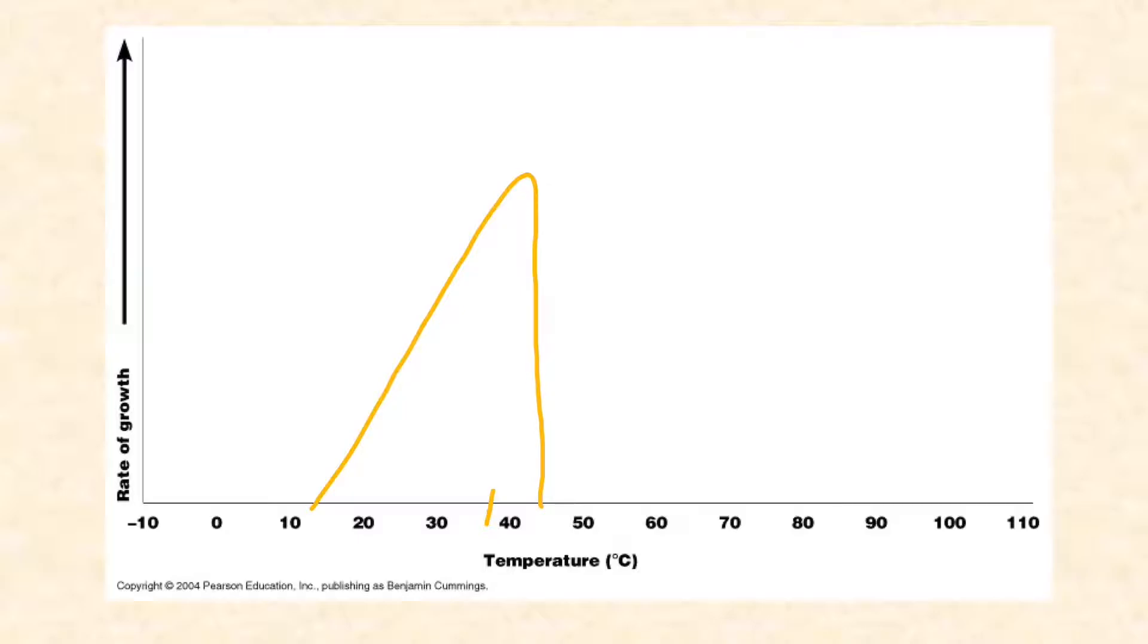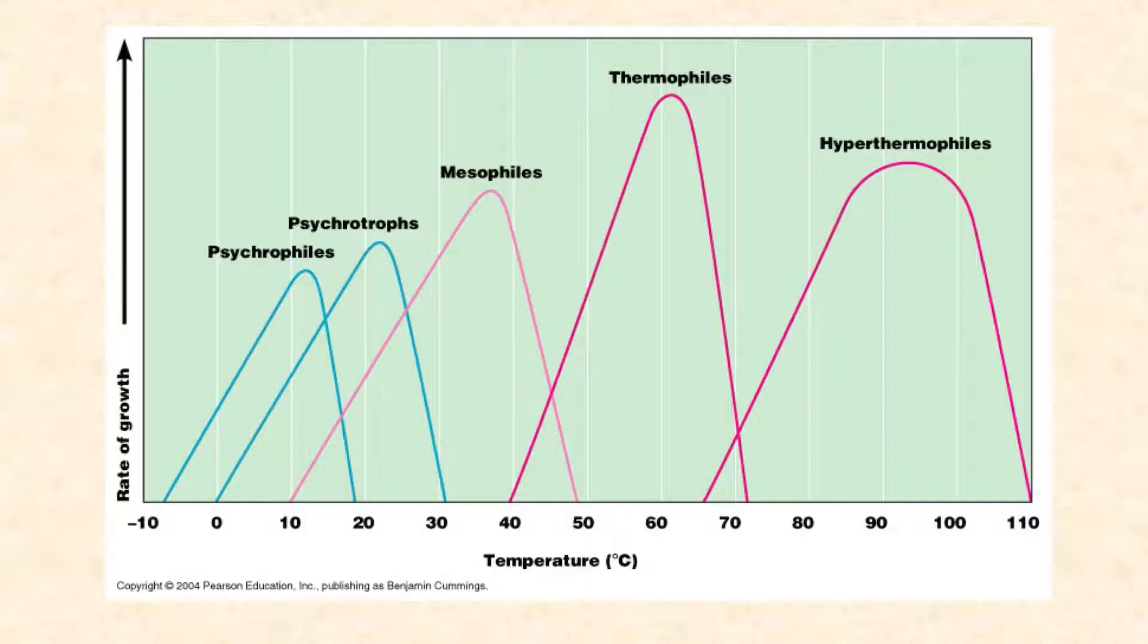On the hot side, to the right of the temperature optimum, we start denaturing that protein, and so growth of the bacteria will drop off very quickly. Here we have our mesophiles in the middle, and you can see the slower slope on the left and the more steep slope on the right of the temperature optimum, which is somewhere around 37 degrees C. Most pathogens of humans are going to be mesophiles.